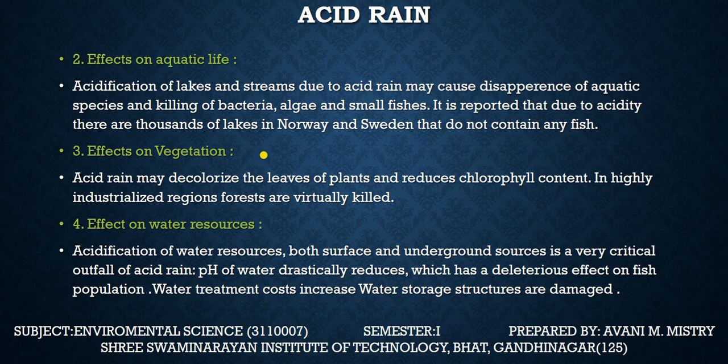Effect on vegetation: acid rain may decolorize the leaves of plants, reduces the chlorophyll content, and in highly industrialized regions, forests are virtually killed — meaning vegetation including plants and trees does not survive in those areas.